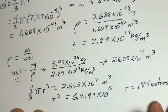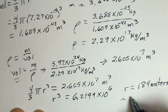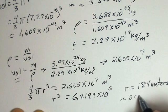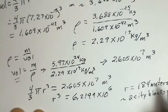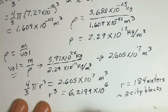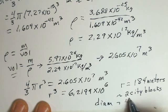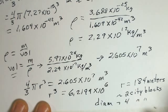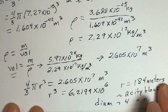184 meters. 184 meters, that's roughly 2 city blocks for the radius. And the diameter,